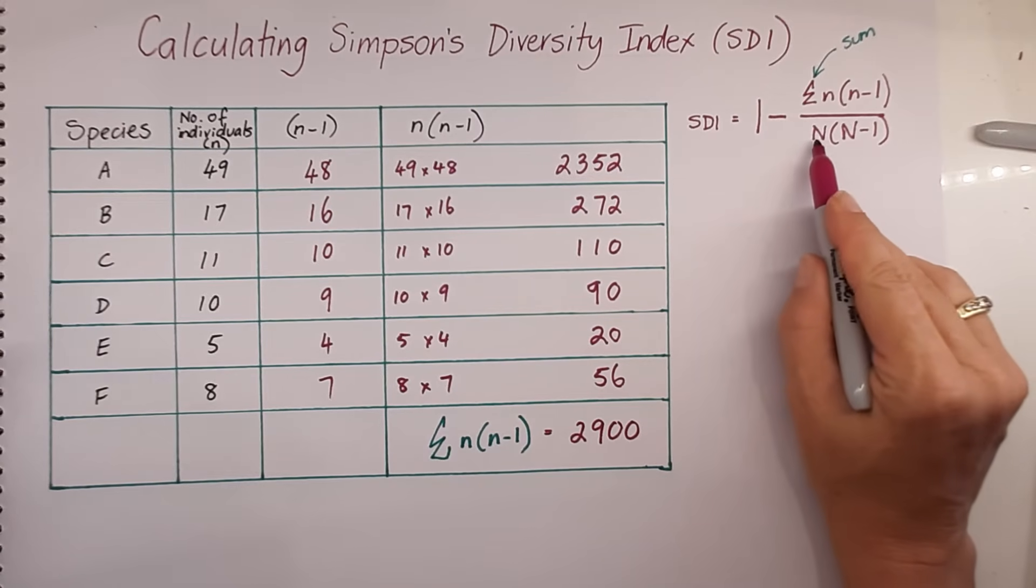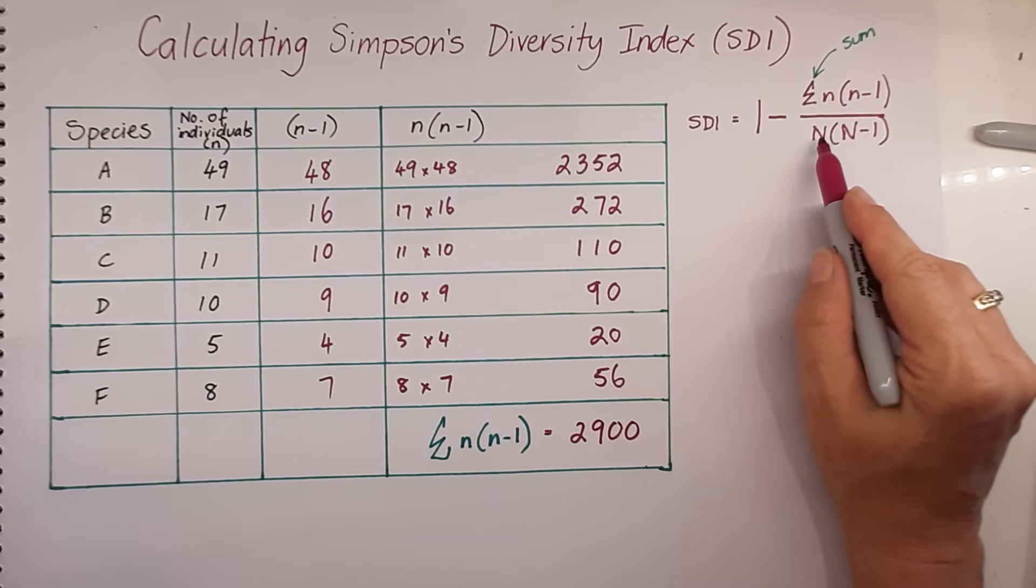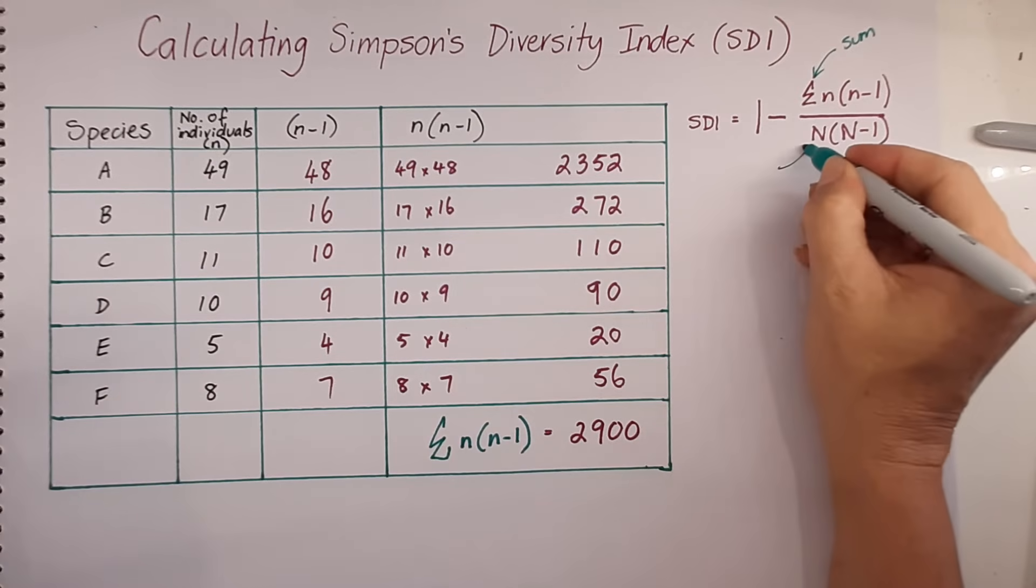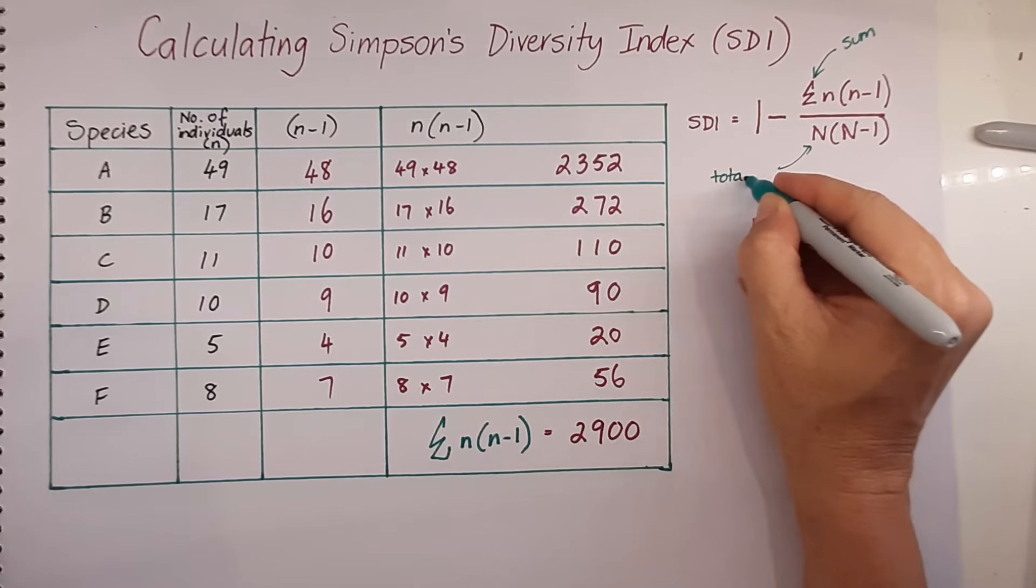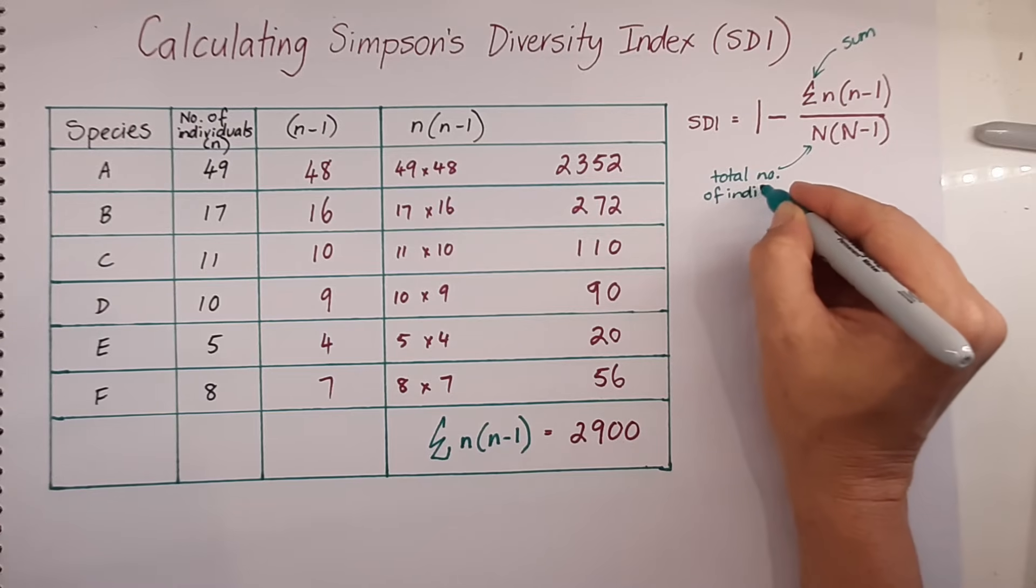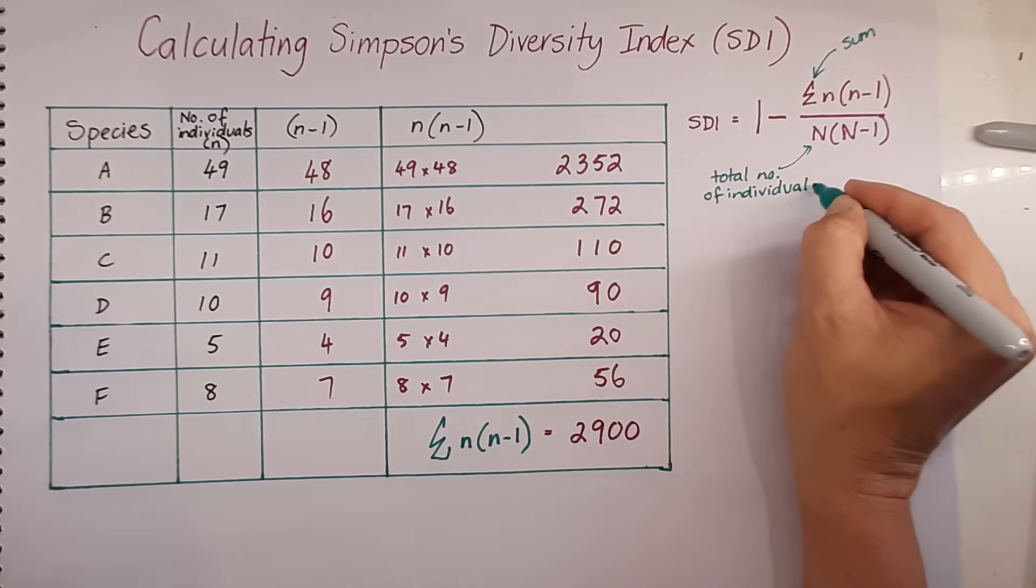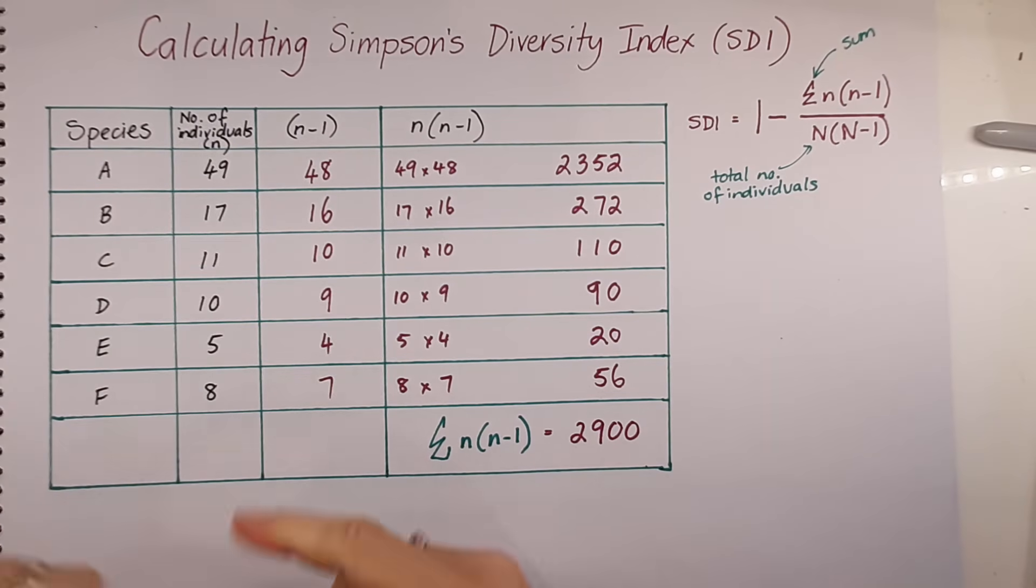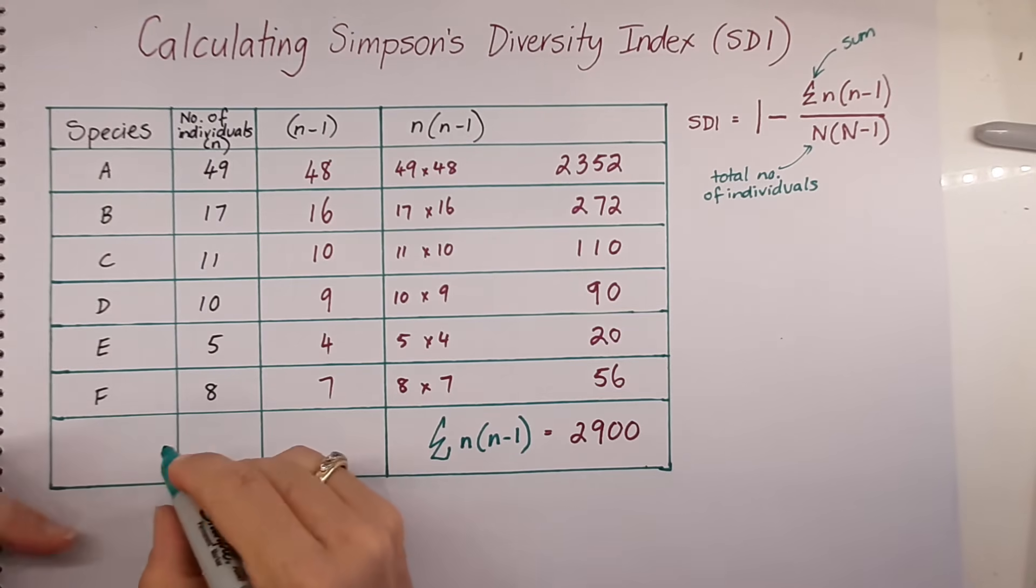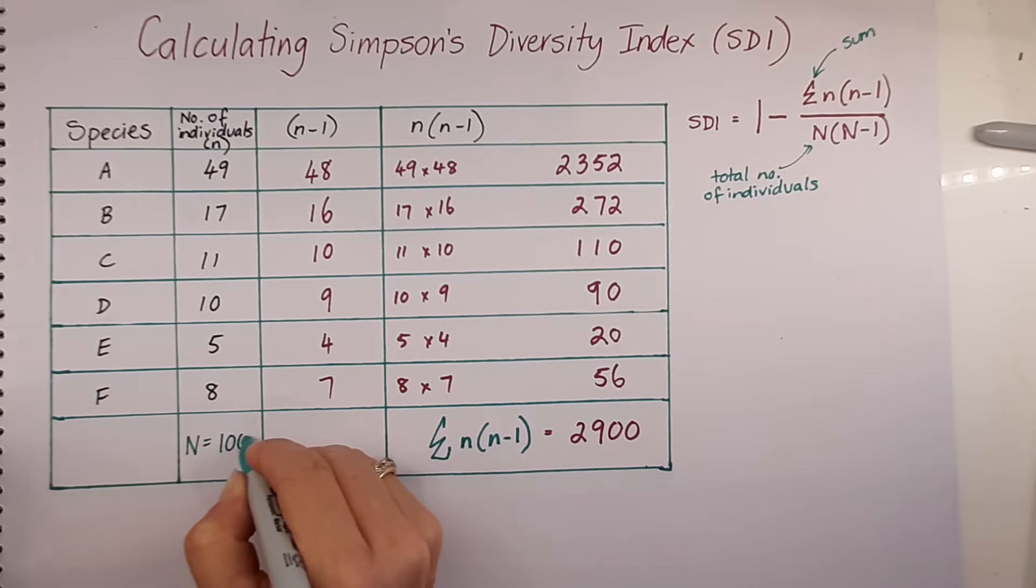When we look at the capital N, that's asking us, well, how many individuals were there in total? So this stands for the total number of individuals in that one sample. So in this case, we're going to add up all of these numbers here. And so in this case, we add all those up, N equals 100.